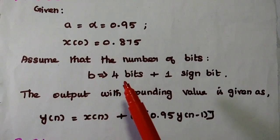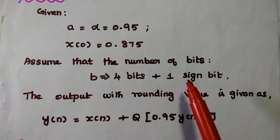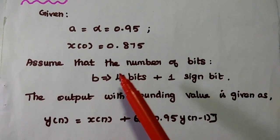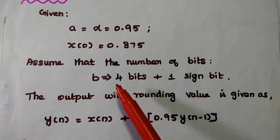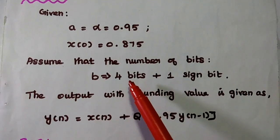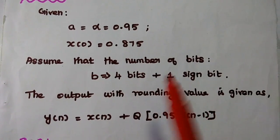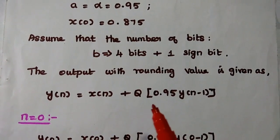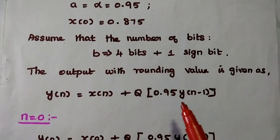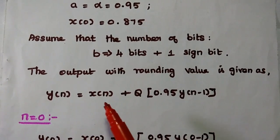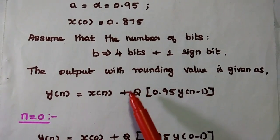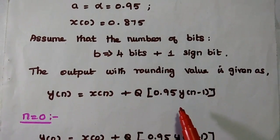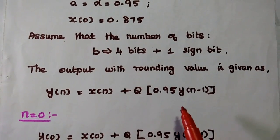Next we are going to assume the number of bits to be rounded off. Here b is equal to 4 bits plus 1 sign bit, but we are concentrating only on these 4 bits — so b is equal to 4 bits, excluding the sign bit. The given difference equation can be written using the quantization method as: y(n) = x(n) + Q[0.95·y(n−1)], because this multiplication process can introduce limit cycle oscillation.